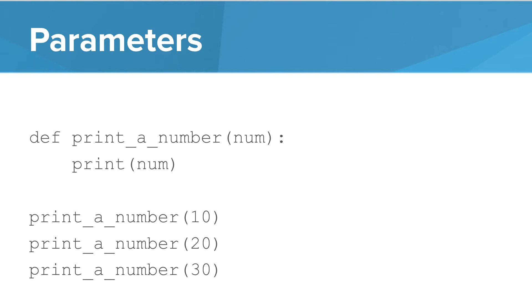Except that num can have different values each time you call print_a_number. Quick note on terminology. In this example, num is the parameter, and the values 10, 20, and 30 are called arguments.